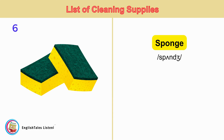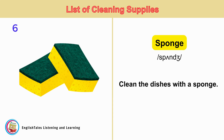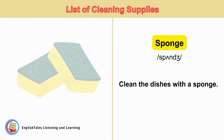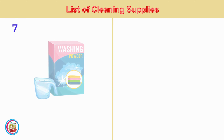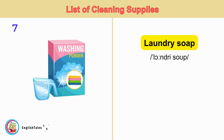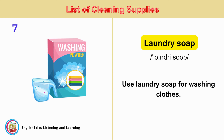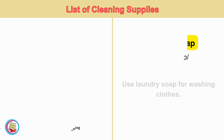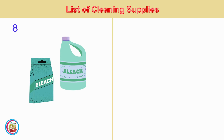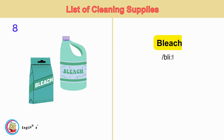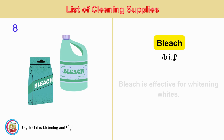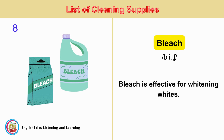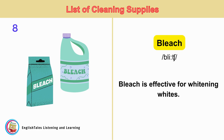Sponge. Clean the dishes with a sponge. Laundry Soap. Use laundry soap for washing clothes. Bleach. Bleach is effective for whitening whites.